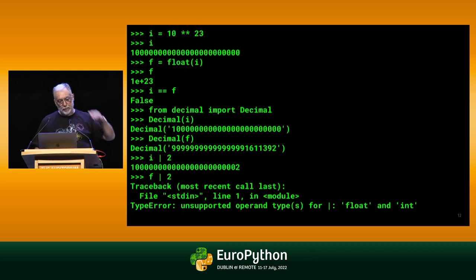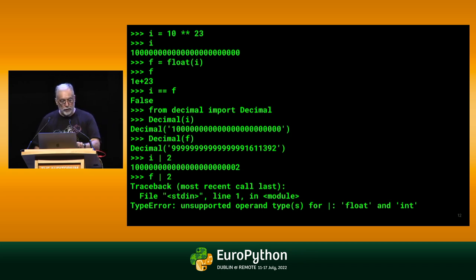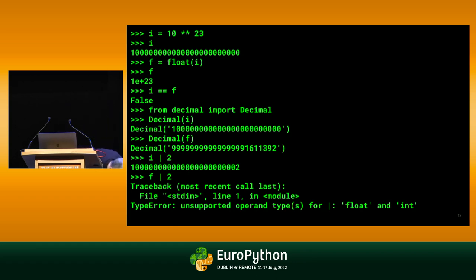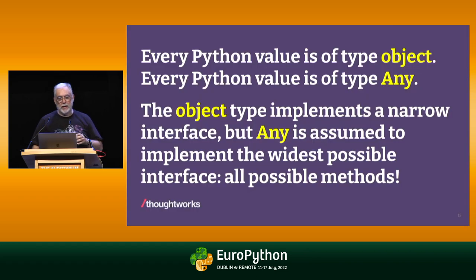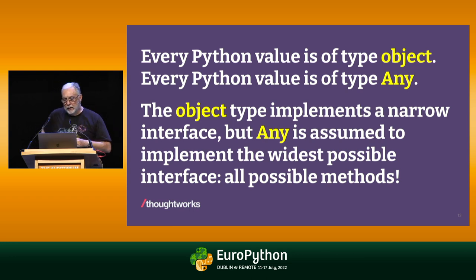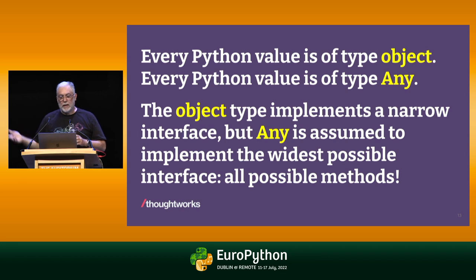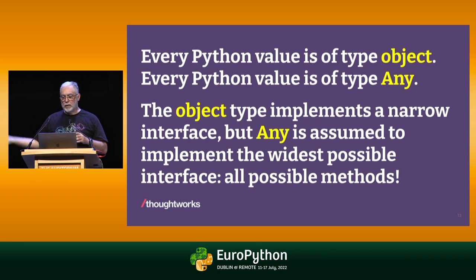Here I continue that example by showing that the pipe operator, which is the bitwise OR, you can use it with an integer but you cannot use it with a float. Another example of how it's more useful to think about the interface is that in Python's static type system, we have now the Any type. Because any value can be assigned to an object variable and any value can be assigned to an Any variable, they are like the universe types.